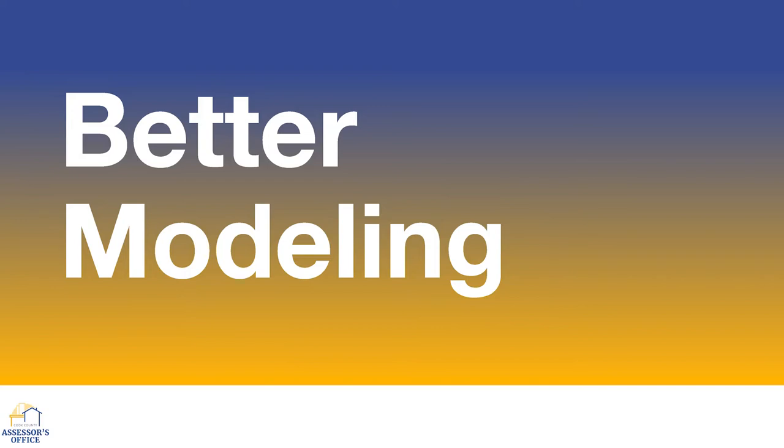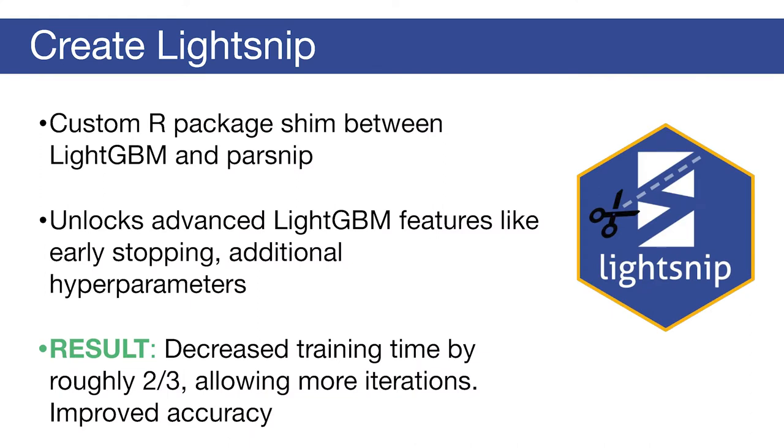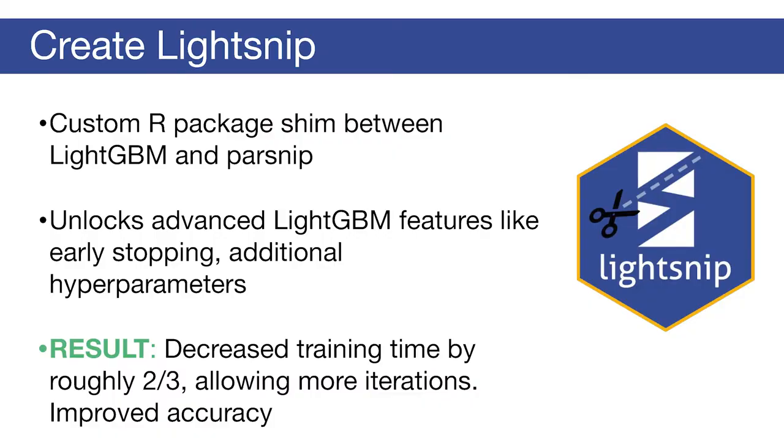So that's the data stuff, and then better modeling itself — really into the weeds now. We've transitioned to tidy models, the ML framework we're using. We also use LightGBM, which is a framework for doing gradient boosted decision trees. We used it in 2021 and we're using it again this year — it performs very well on our data and it's very fast to train. The problem is that LightGBM and tidy models do not play well together. So we wrote an R package to act as a shim between them to get better integration. By unlocking some of the advanced features of LightGBM, we've cut the training time by about two thirds and increased model accuracy.